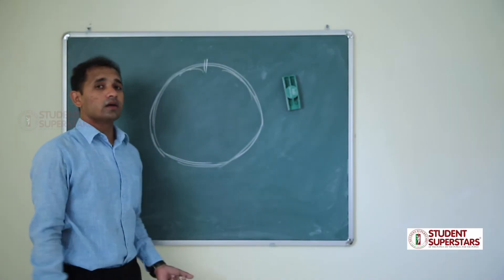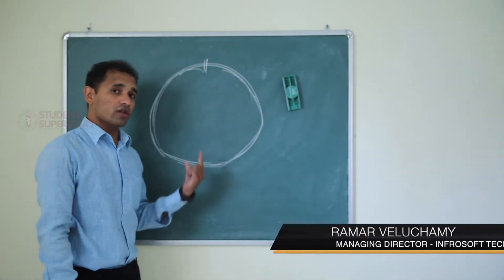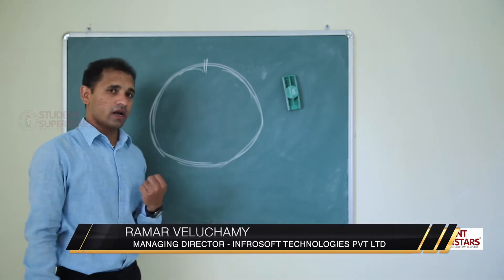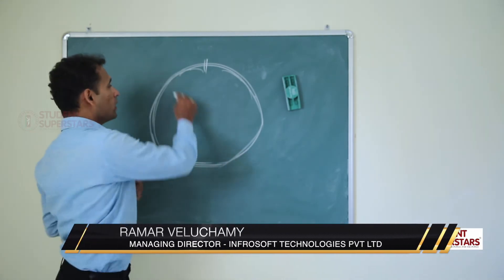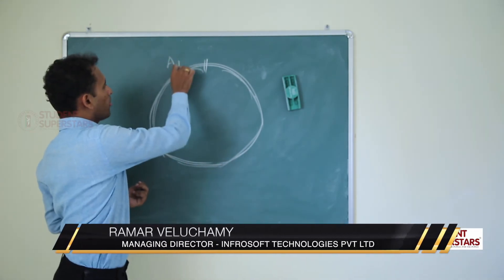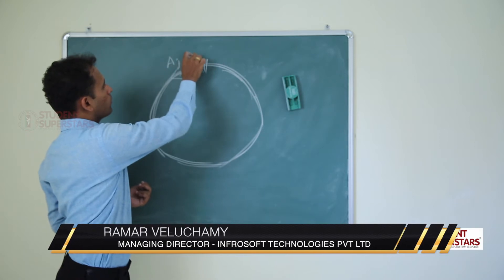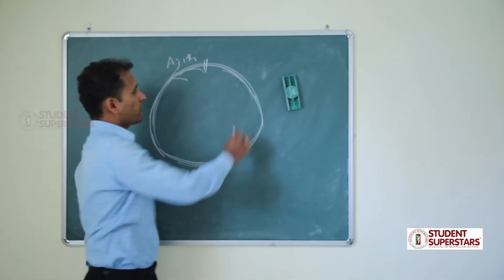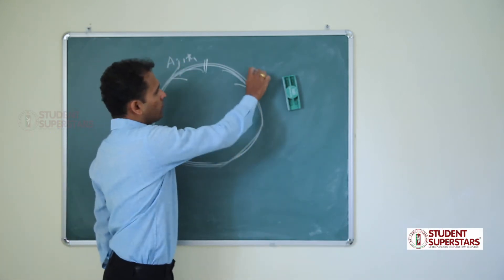This is the circular track — time and distance on the circular track. There are two persons running in the circular track. The first person is Ajit and the second person is Vijay.